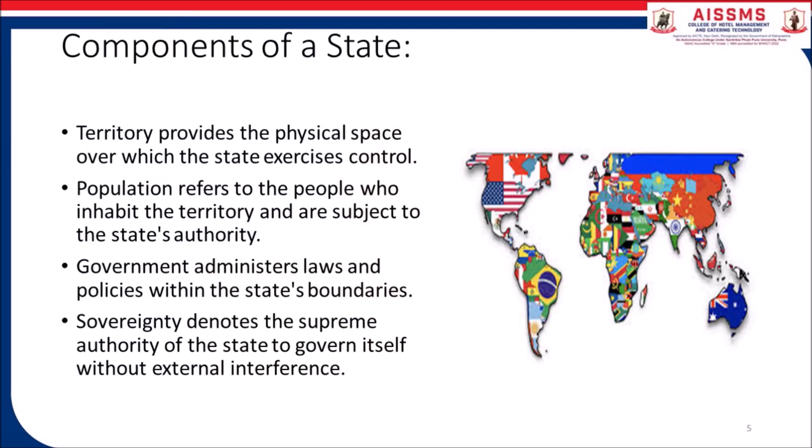What are the components of the state? Territory provides the physical space over which the state exercises control. Population refers to the people who inhabit the territory and are subject to the state's authority — whoever is living in that country is governed by the rules of that nation. Government administers laws and policies within the state boundaries. Sovereignty denotes the supreme authority of the state to govern itself without any external interference.